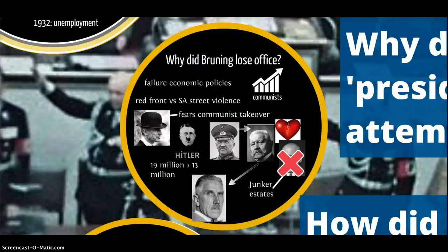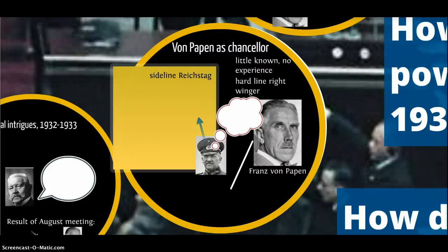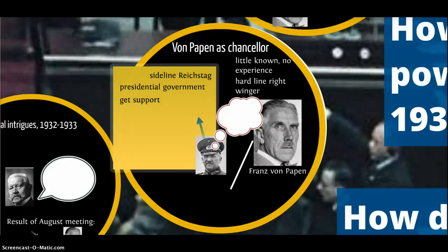Schleicher persuades Hindenburg to appoint Franz von Papen as chancellor. Von Papen was little known, had no real experience, and was not well respected for his intellect, but he was a hardline right-winger and very nationalistic. Schleicher was like a spider behind the scenes manipulating events. He wanted to sideline the Reichstag and move towards a more authoritarian presidential form of government — which von Papen wanted as well. But to do that, they still needed some measure of support from the Reichstag, and it was difficult to get that because of the disunity within it. Schleicher realised he needed the support of the Nazis.